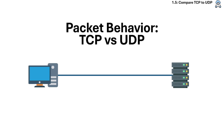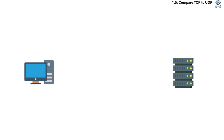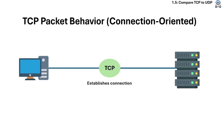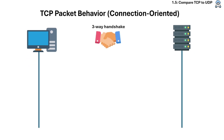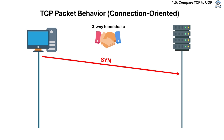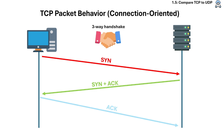Let's talk about the difference in packet behavior. TCP establishes a connection before data is sent using a three-way handshake. First, the client initiates the connection by sending a SYN packet. Then, the server responds with a SYN-ACK packet. Finally, the client receives the SYN-ACK and sends an ACK packet back to the server.